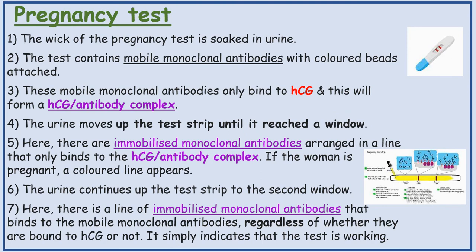Pregnancy tests. The wick of the pregnancy test is soaked in urine. The test contains mobile monoclonal antibodies with coloured beads attached. These mobile monoclonal antibodies only bind to HCG, forming an HCG-antibody complex. The urine moves up the test strip until it reaches a window, where there are immobilised monoclonal antibodies arranged in a line that only bind to the HCG-antibody complex.